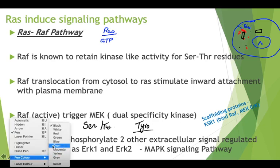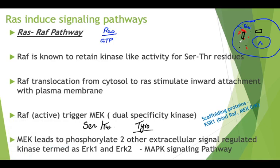These wider-range phosphorylations lead to the activation of two additional components called extracellular receptor kinases: ERK1 and ERK2. ERK1 and ERK2 produce a wider range of signals that enter the nucleus and trigger phenomena such as protein synthesis, transcription factor activation, and chromatin remodeling.